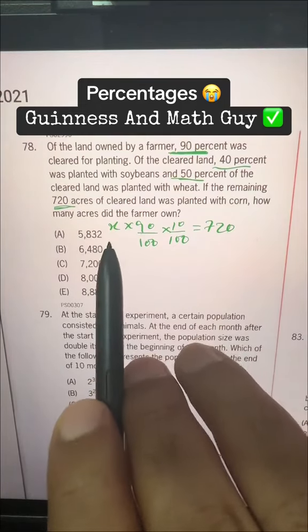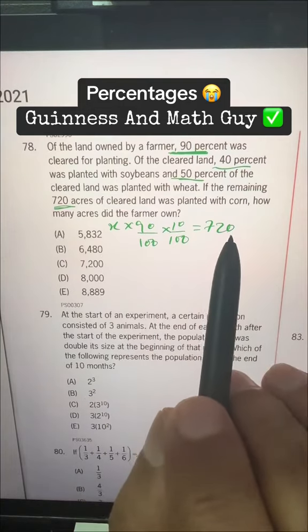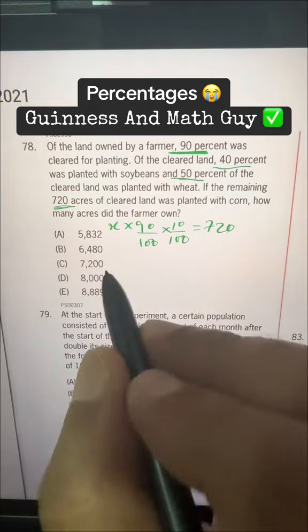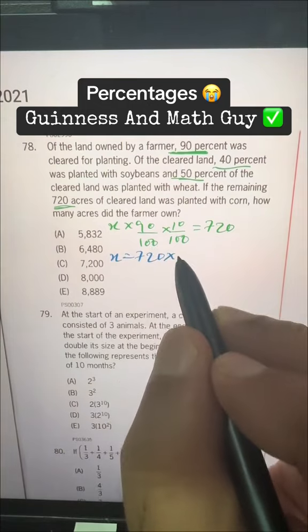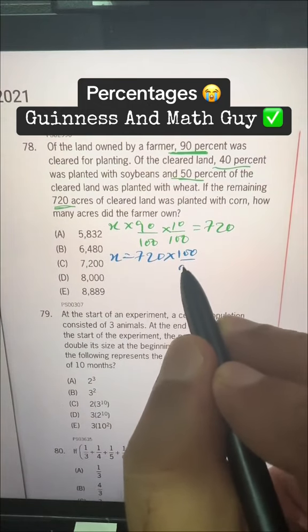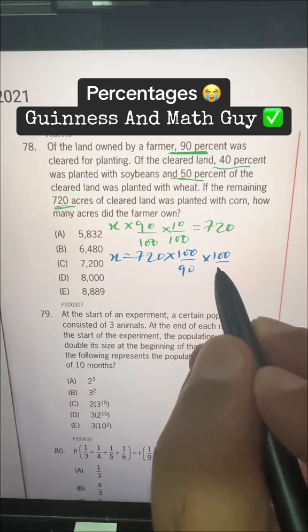So, we need to find X. Now, these both will go to the other side and we will flip them. So, X is equal to 720 times 100 over 90 times 100 over 10.